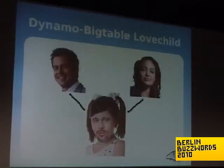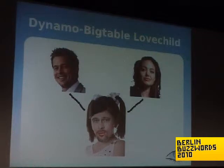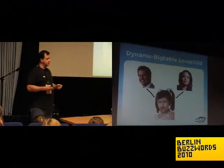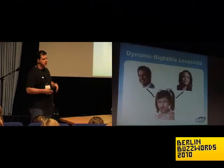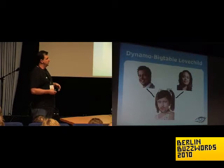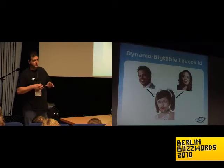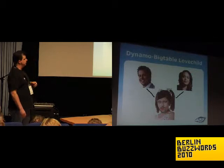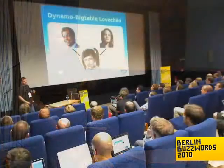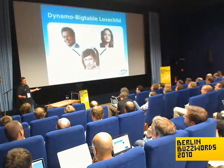Cassandra is kind of a hybrid. It shares a lot of the BigTable architecture — pretty much the same data model and the same log-structured merge tree for storage. But it has the distribution and the eventual consistency of Dynamo. So we like to tongue-in-cheek refer to it as a next-generation, best-of-breed kind of thing — it's buzzwords, right?